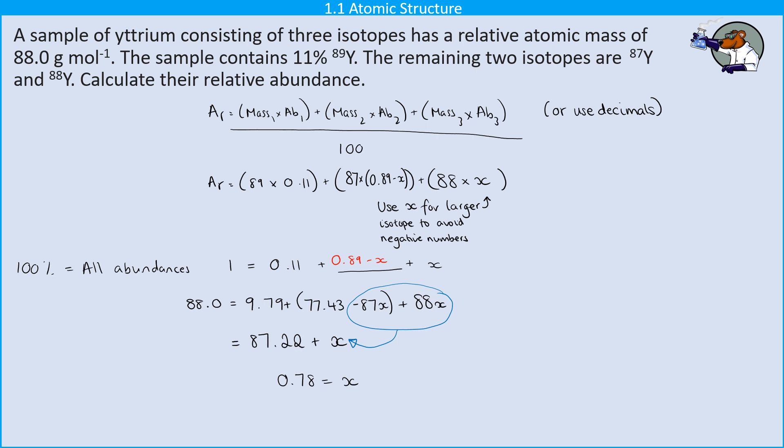Okay, so what does that actually mean? Well I was expressing my abundances as decimals so one would be 100%, therefore 0.78 is 78%, and that was the abundance of my isotope 88. So this means I've got 78% of yttrium-88, and then that leaves me with 11% of the yttrium-87.